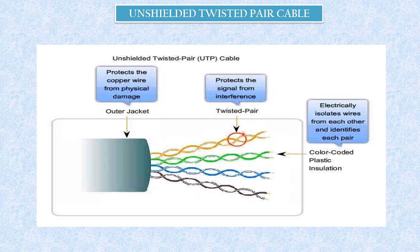Unshielded Twisted Pair cable, or UTP. UTP consists of a number of twisted pairs with a plastic jacket. This plastic jacket protects the copper wire from physical damage. The twisted pair protects the signal from interference. There are four pairs labeled as pair 1, pair 2, pair 3, and pair 4, with different color-coded plastic insulation. Pair 2 and pair 3 are used for normal 10/100 megabits per second, while pair 1 and pair 4 are reserved. In Gigabit Ethernet, all four pairs are used. UTP is commonly used in telephone systems and increasingly in LAN.